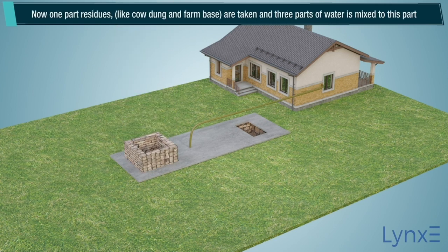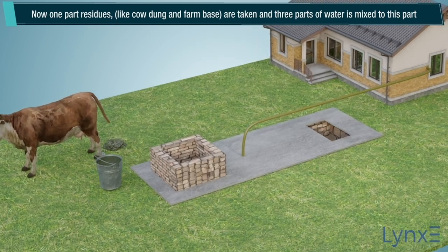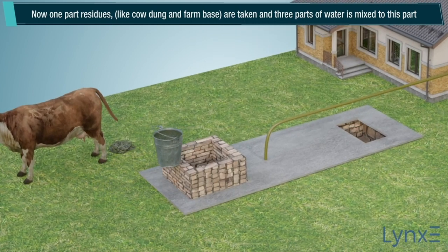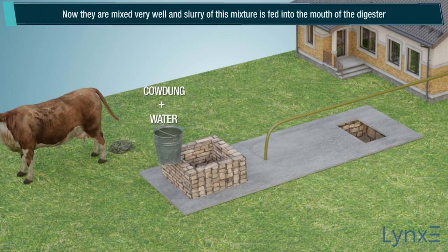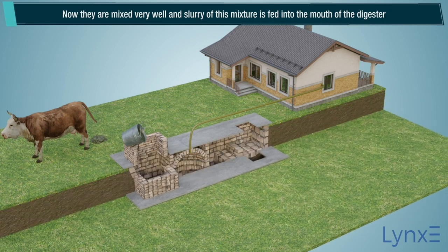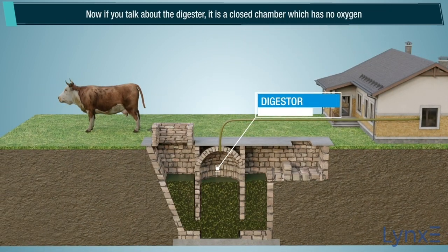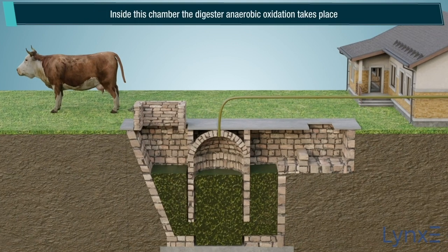One part residues, like cow dung and farm waste, are taken and three parts of water is mixed to this. They are mixed very well and the slurry of this mixture is fed into the mouth of the digester. The digester is a closed chamber which has no oxygen, and inside this chamber anaerobic oxidation takes place.